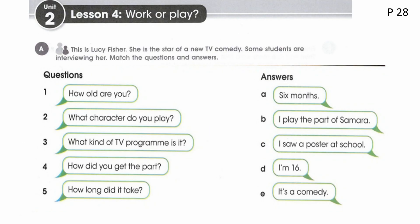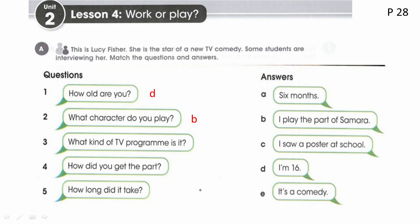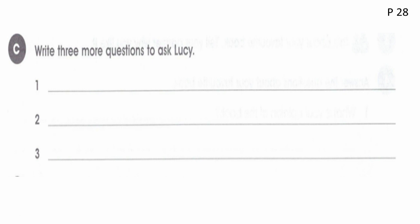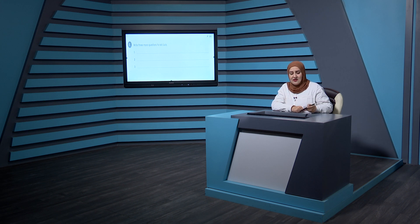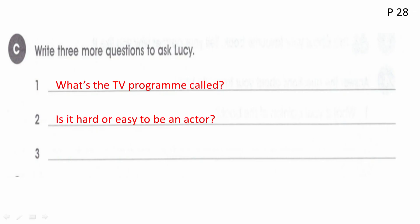Now move to Activity Book page 28. This is the same matching exercise from the student's book: 'How old are you?' — 'I am 16.' 'What character do you play?' — 'I play the part of Samara.' 'What kind of TV program is it?' — 'It is a comedy.' 'How did you get the part?' — 'I saw a poster at school.' 'How long did it take?' — 'Six months.' Also on page 28, write three more questions to ask Lucy. We wrote: 'What's the TV program called?'